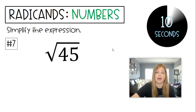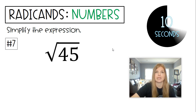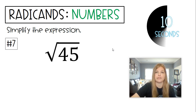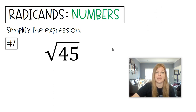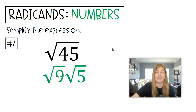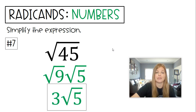Next one, Radical 45. The biggest perfect square that goes into 45 is 9. So Radical 9 times Radical 5 becomes 3 Radical 5.